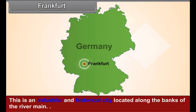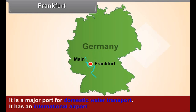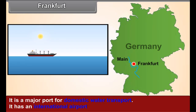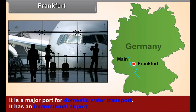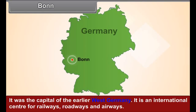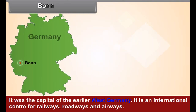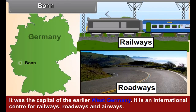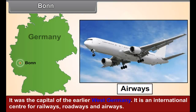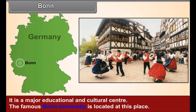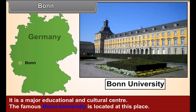Frankfurt is an industrial and historical city located along the banks of the river Main. It is a major port for domestic water transport and has an international airport. Bonn was the capital of the earlier West Germany. It is an international centre for railways, roadways, and airways, and is a major educational and cultural centre. The famous Bonn University is located here.